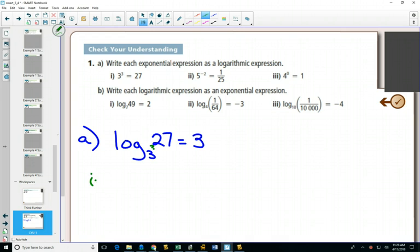In B, or II, we have 5 to the negative 2 equals 1/25, so we would write this as a logarithm as log base 5 of 1/25, and the exponent is negative 2. So log₅(1/25) is equal to negative 2.